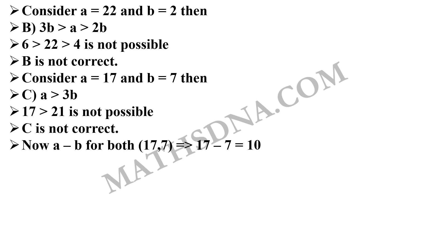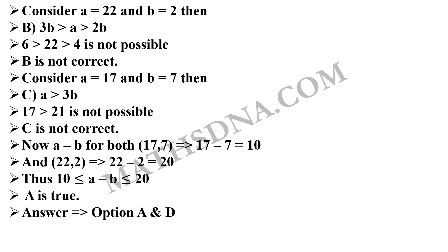Now, for difference that is a minus b for 17, 7 that is 10 and for 22, 2 that is 20. So, clearly a minus b is in between 10 and 20. It can be 10 and it can be 20 as well. Thus, option A is true. Hence, the correct answers are option A and option D.